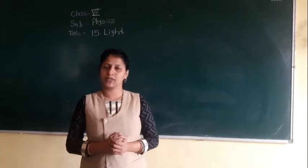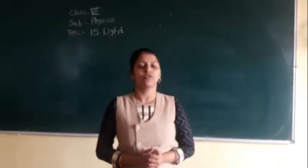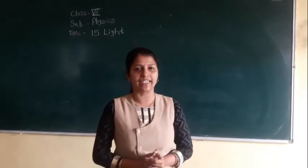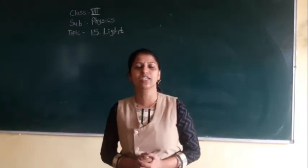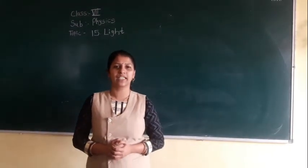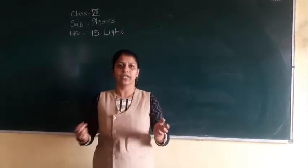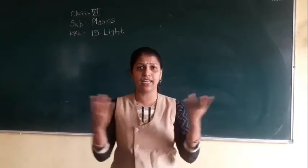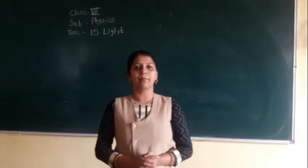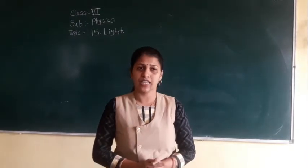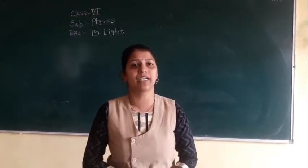In class 6, we also learned about different types of materials through which light can or cannot pass. There are transparent, translucent, and opaque materials. A transparent material is one through which light can pass easily — for example, air and glass.